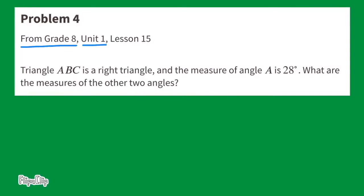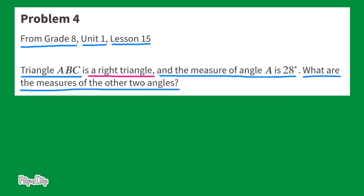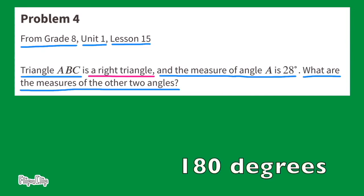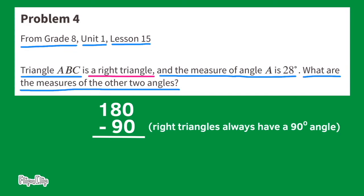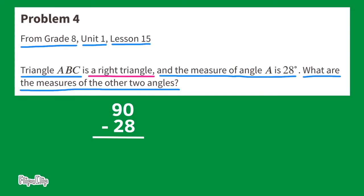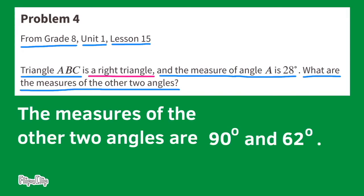Problem number 4 from 8th grade Unit 1, Lesson 15. Triangle ABC is a right triangle, and the measure of angle A is 28 degrees. What are the measures of the other two angles? The sum of all three angles in every triangle totals 180 degrees. Since it's a right triangle, one angle is 90 degrees. So 180 minus 90 leaves 90 degrees remaining. Then 90 minus 28 equals 62 degrees. The measures of the other two angles are 90 degrees and 62 degrees.